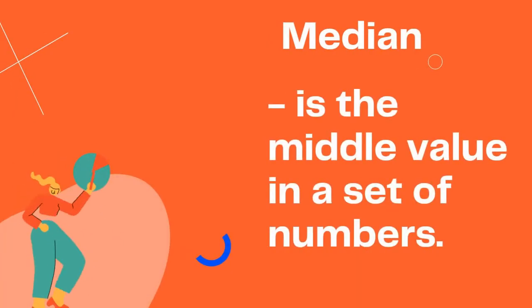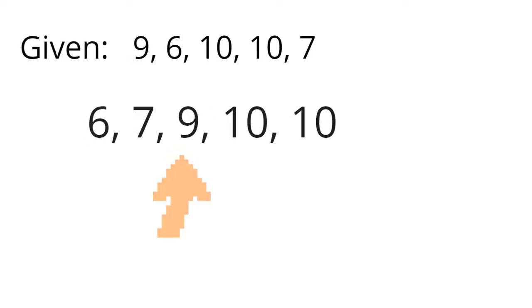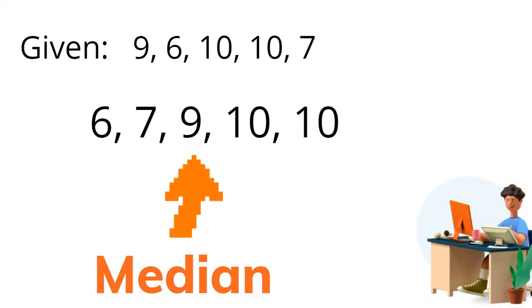Median is the middle value in a set of numbers. To find the median, we simply first arrange the given data set in increasing order. And in our example here, the middle most value is 9.